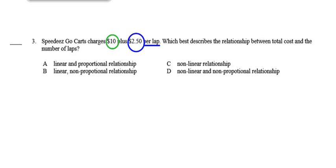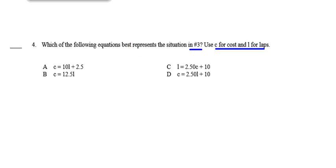Question 3: C, not linear. Question 4: Which of the following equations best represents the situation in number 3? Use C for cost and L for laps. A says the cost is $10 a lap plus 2.5. B says cost is 12.5L. C says L equals 2.5C plus 10. D says the cost is $2.50 a lap plus $10.